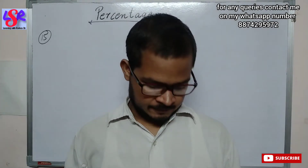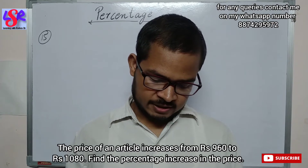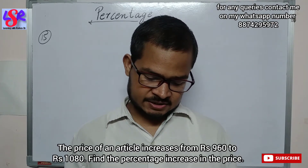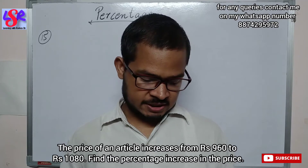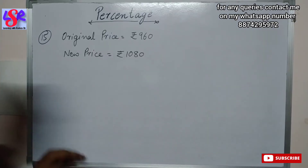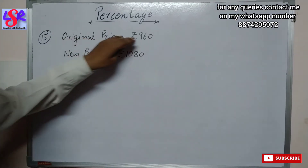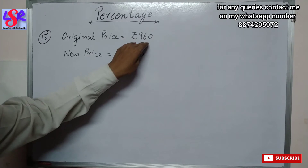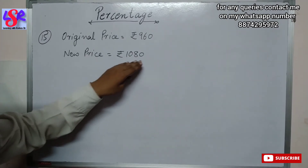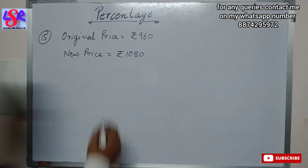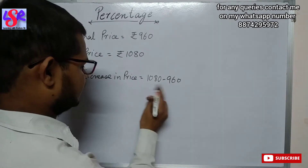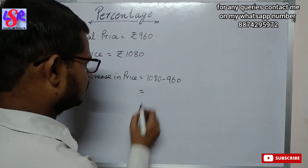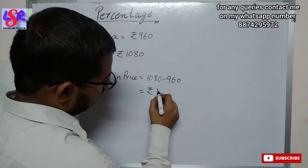Now we move to question number 15. The price of an article increases from rupees 960 to 1080. Find the percentage increase in price. Here, original price is rupees 960 and the new price is 1080. The increase in price is 1080 minus 960, which equals rupees 120.